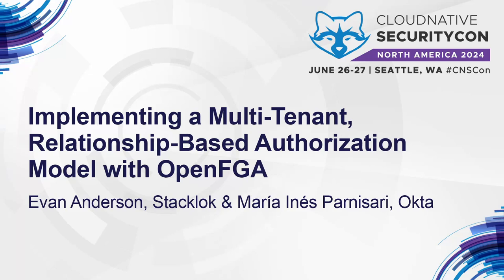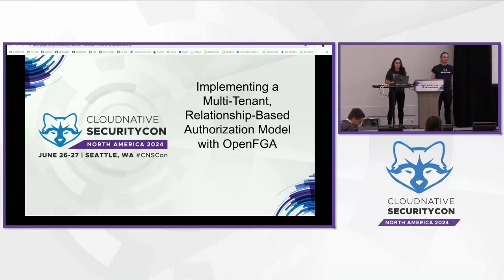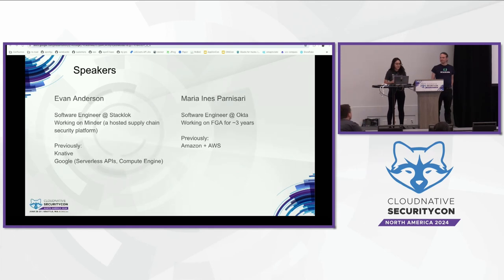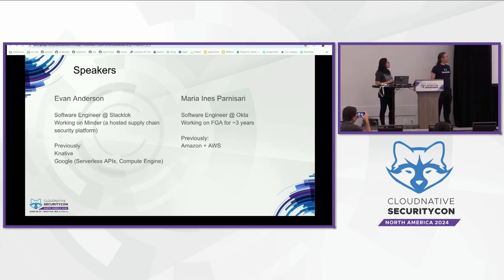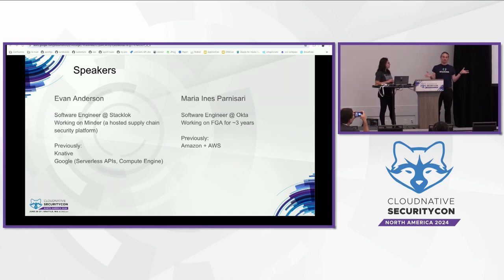Today we're going to be talking about how to implement a multi-tenant relationship-based authorization model with OpenFGA. I'm Evan Anderson. I'm working at StackLock, and one of our two products is a supply chain security platform that we intend to host for everybody to secure their open source projects.